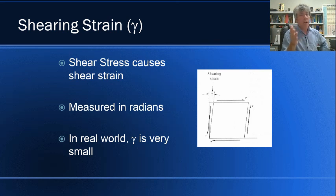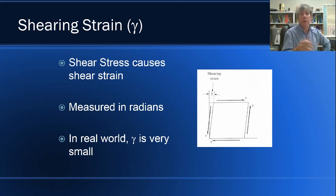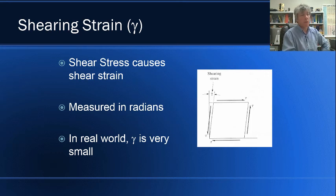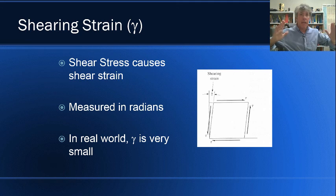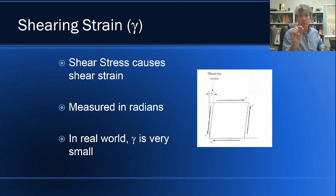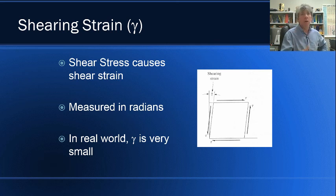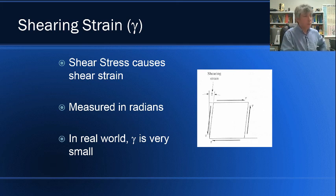In the real world, the value of gamma — this angle change — is very small. It's not like Jell-O where you'd have a significant visible angle change. Just like compressing a concrete block will change its length very slightly, applying shearing stress to concrete will exhibit some shearing strain, but it'll be very small and hardly noticeable.